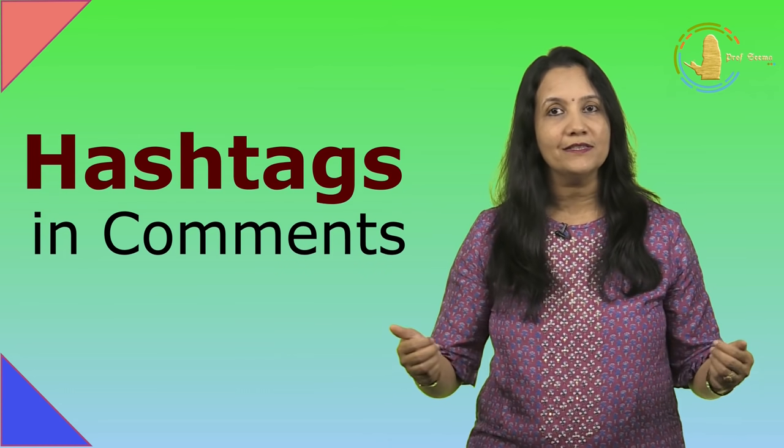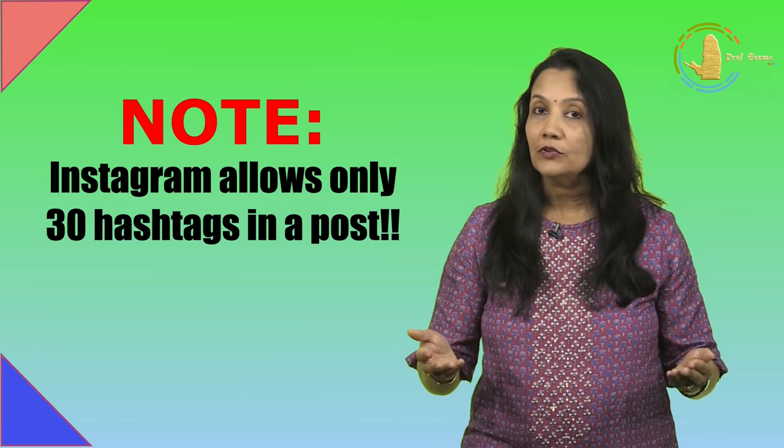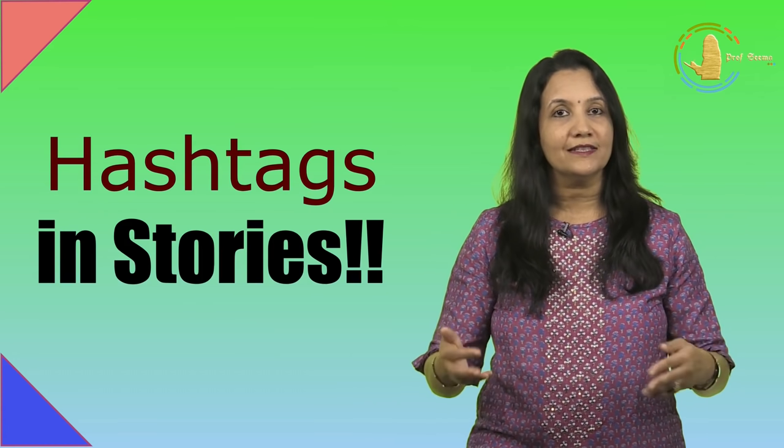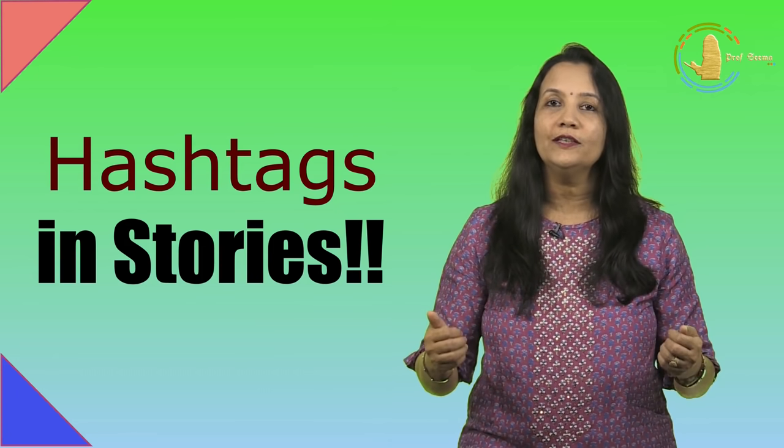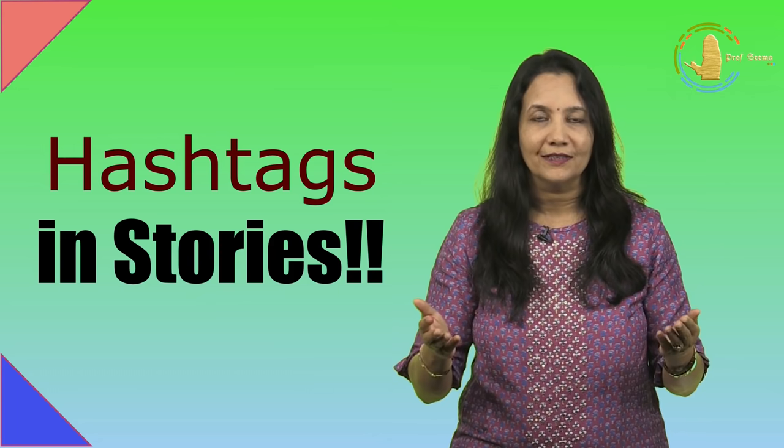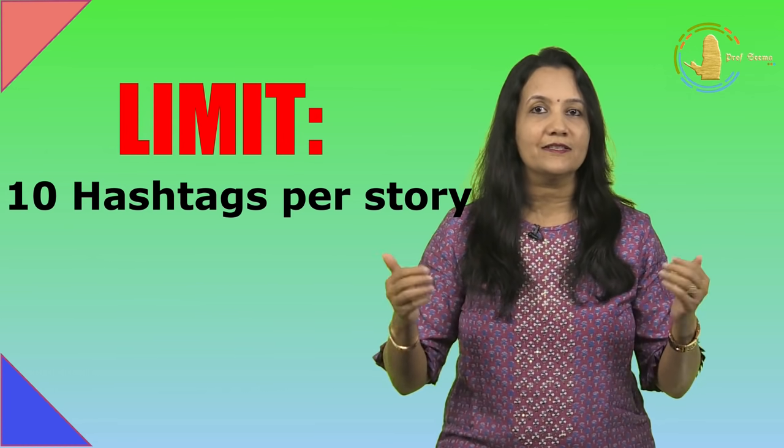Another way is to put the hashtags in the comment section. Note, Instagram allows only 30 hashtags in a post. This includes hashtags in comments as well. You can also put hashtags in stories. All you need to do is write the hashtag on the pic with the text option. Instagram puts a limit of 10 hashtags per story.